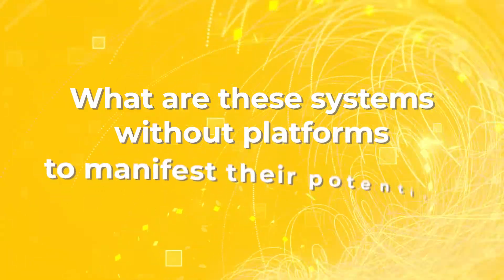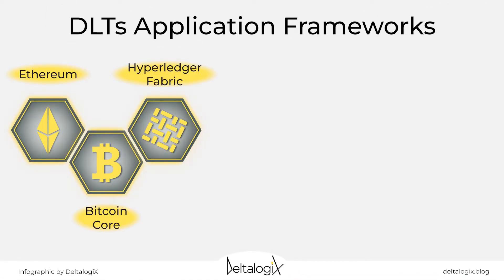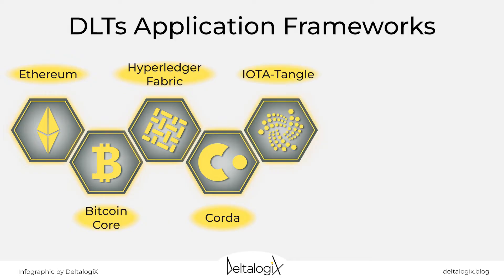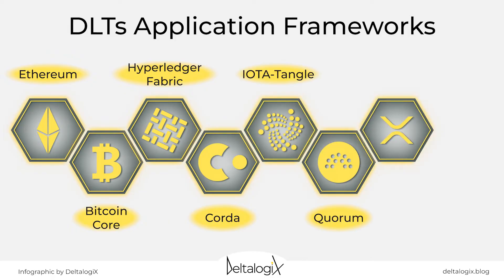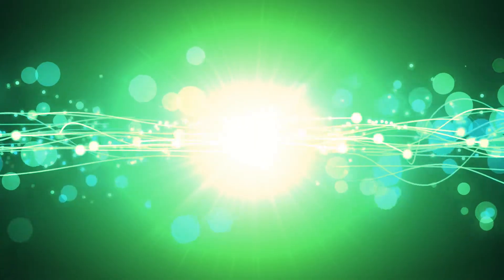But what are these systems without platforms to manifest their potential? The report intricately explores application frameworks like Ethereum, Bitcoin Core, Hyperledger Fabric, Corda, IOTA Tangle, Quorum, XRP Ripple, and EOSIO. These frameworks serve as the conduits, harnessing the power of DLTs and sculpting them into real-world applications, changing the way we perceive technology.